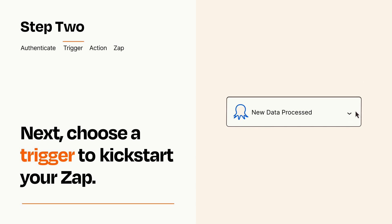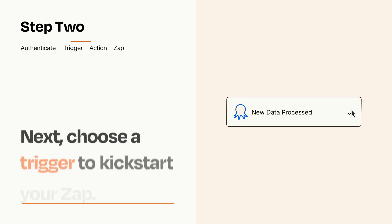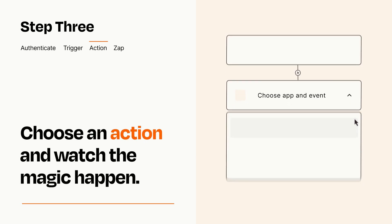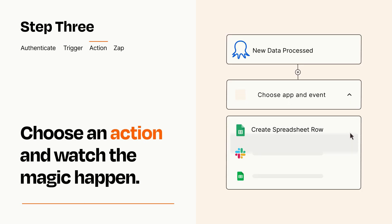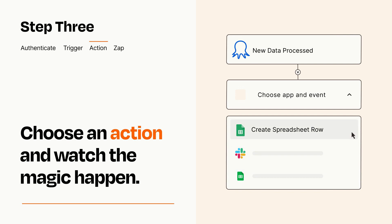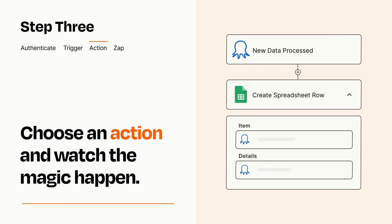This last part is where the magic happens. Choose the action you want to happen in your target app. You'll see a bunch of fields where you can specify the details of your Zap. You can type free form text or pull data in from your trigger step as needed.